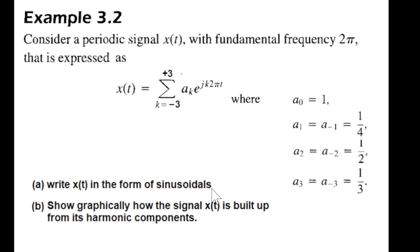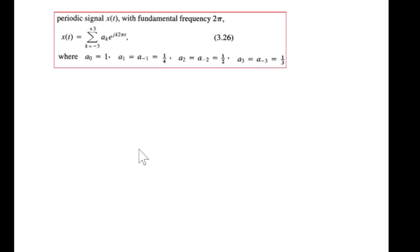The question says write x(t) in the form of sinusoids (that is part a), and then show graphically how the signal x(t) is built up from its harmonic components. Let's see the first part.